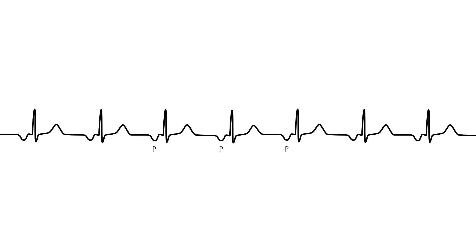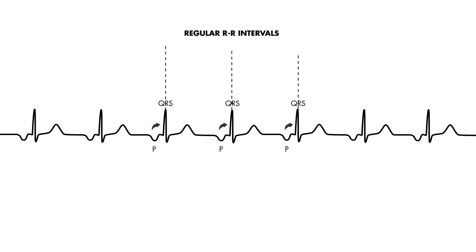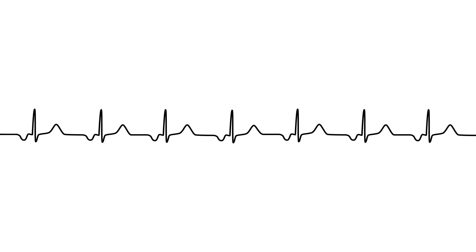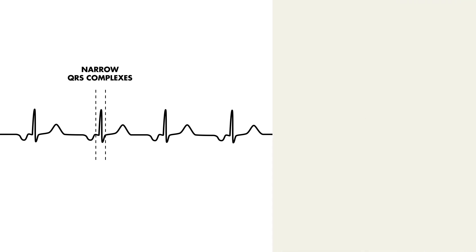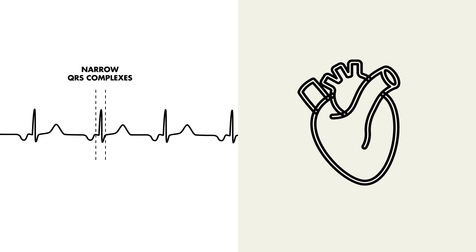Classically, all P-waves are followed by a QRS complex. Unless there is also underlying AV block, R-R intervals are often regular. And finally, QRS complexes are narrow. That's because electrical conduction passes through a similar pathway — from atria, through the AV node, down the His-Purkinje system, and down to the ventricles.